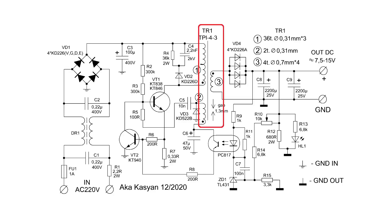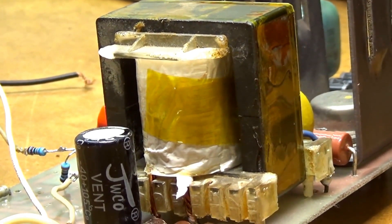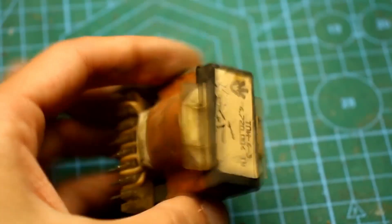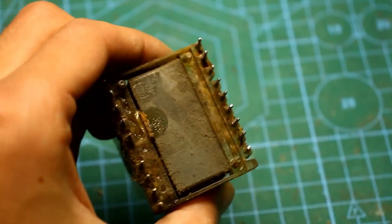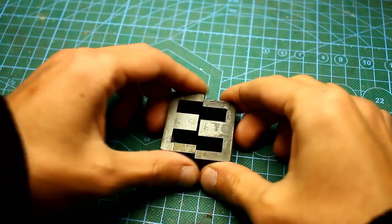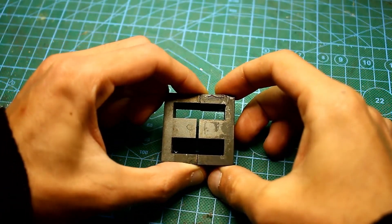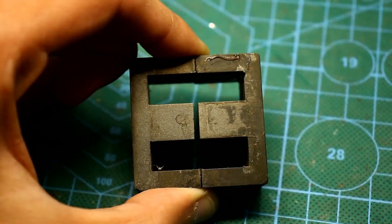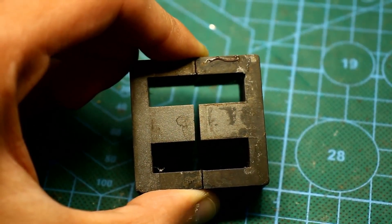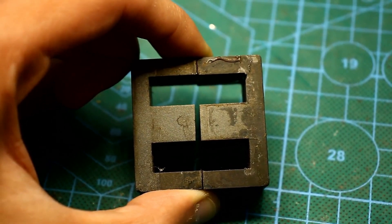Power transformer, or to be more precise, it's a multi-winding choke, as in this circuit it functions specifically as a choke. The TPI 4-3 transformer is used as the basis. It is specifically designed to work in such circuits and has a non-magnetic gap between the core halves, which is necessary in our case. However, it is naturally necessary to rewind the transformer for our needs.